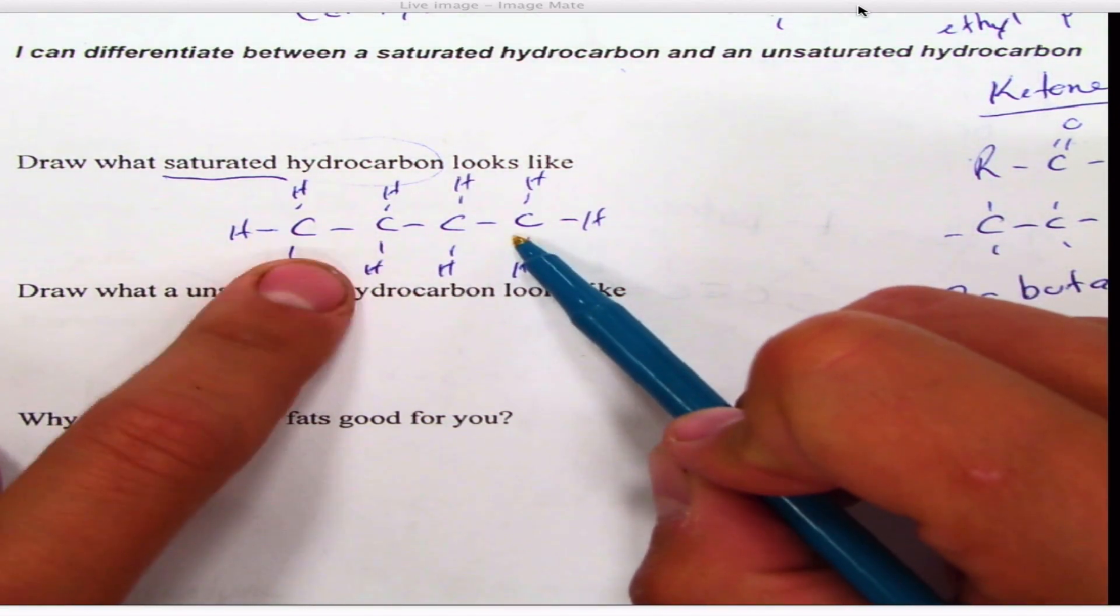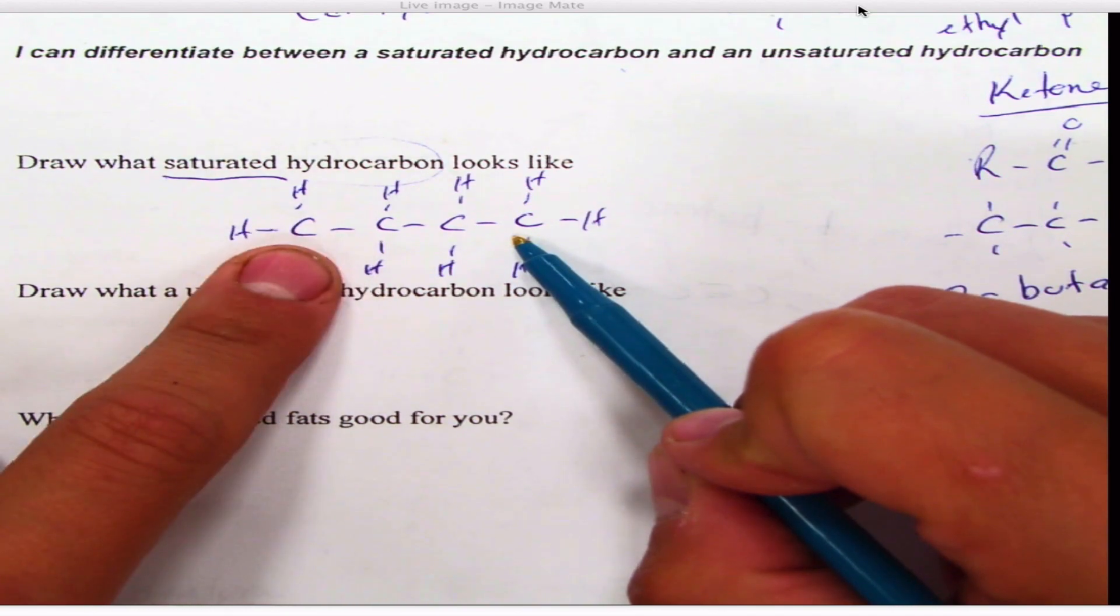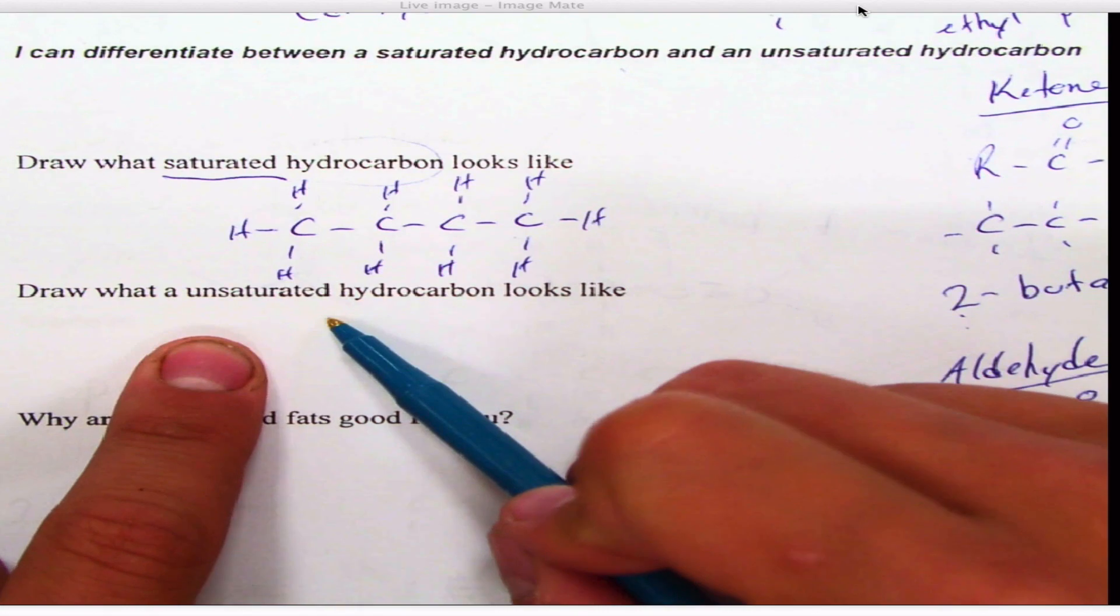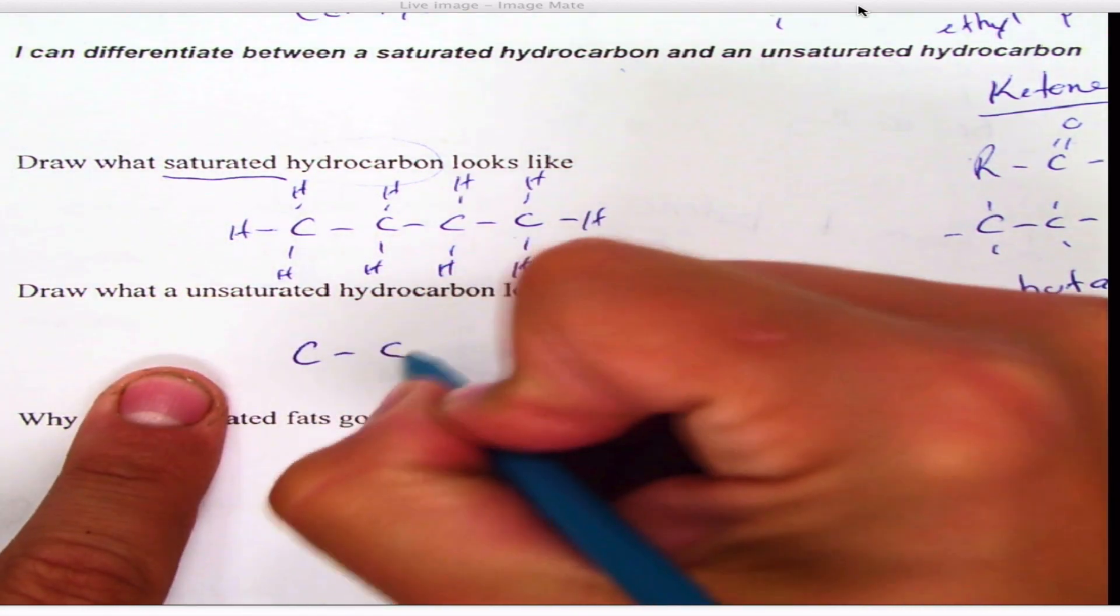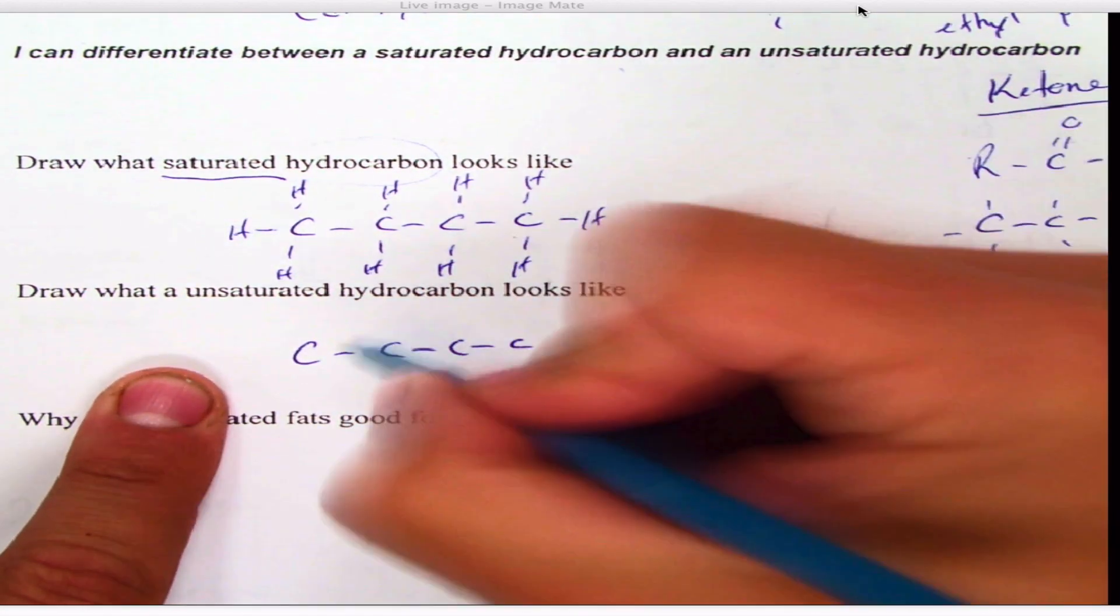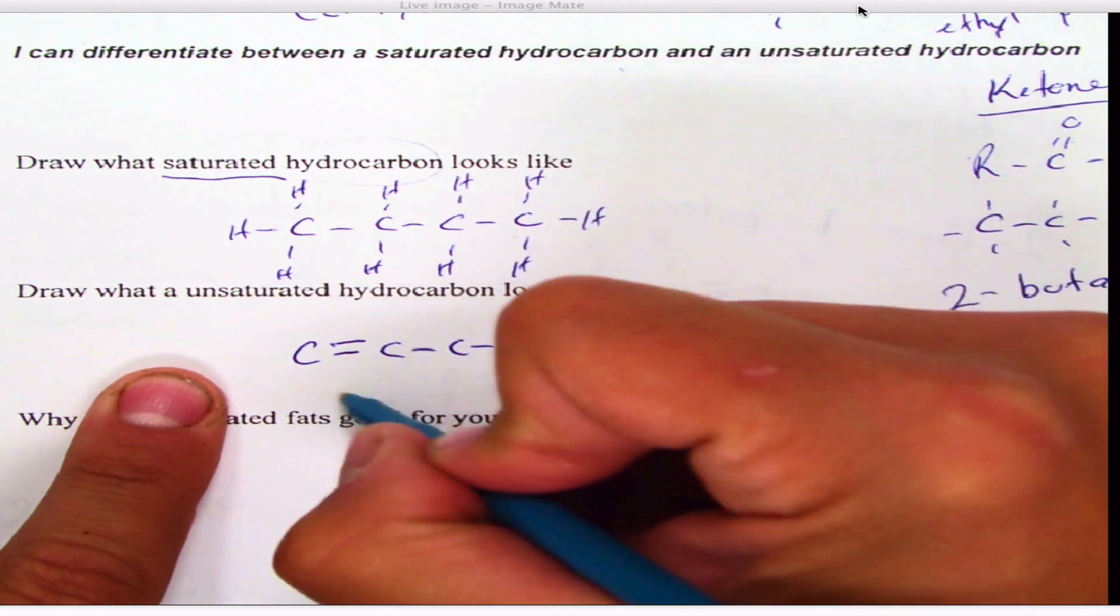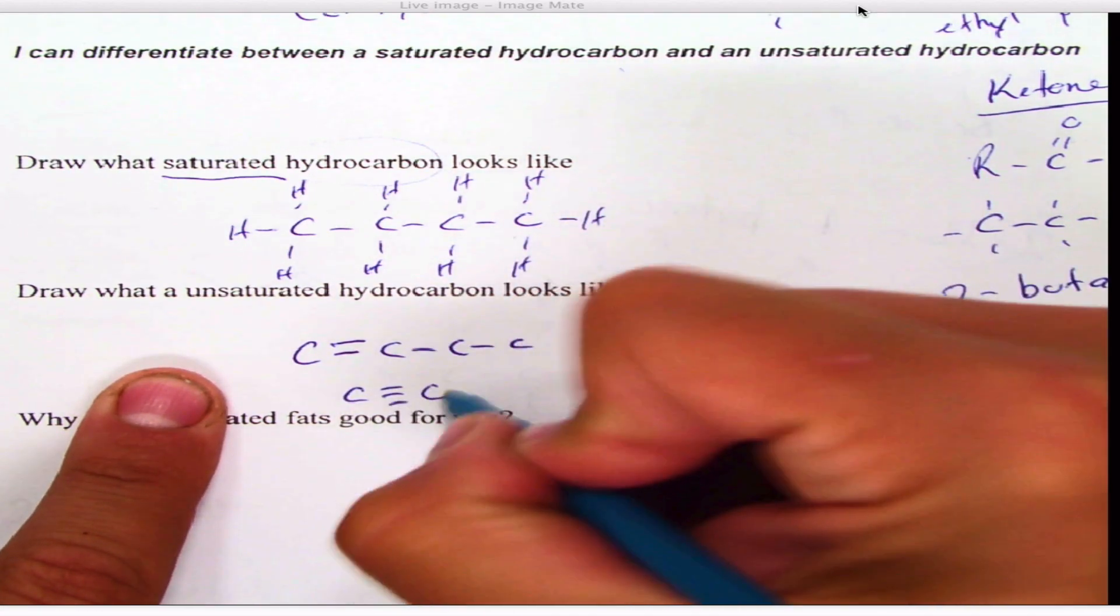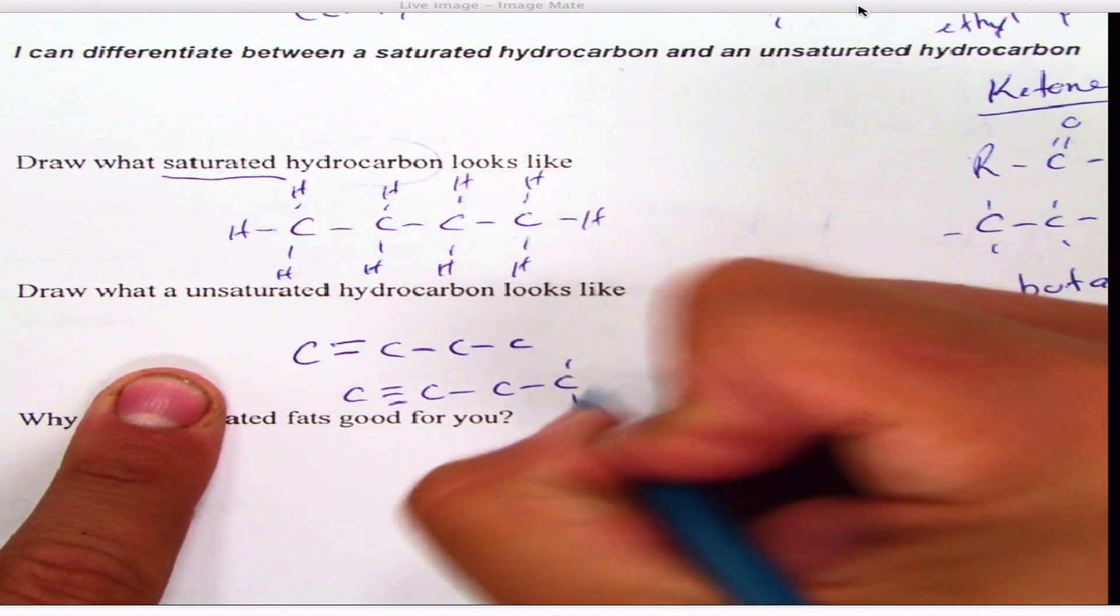Okay, so saturated means you have maximum amount, whereas unsaturated means you don't. So what takes the hydrogens' place? Double or triple bonds, depending on what kind of molecule you have.